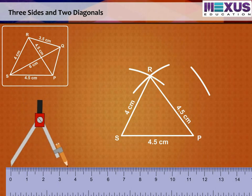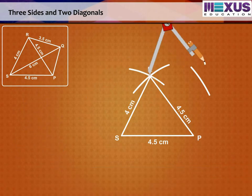Now, draw an arc of radius 3.5 cm with R as center. We would get Q somewhere on this drawn arc also. Step 4.